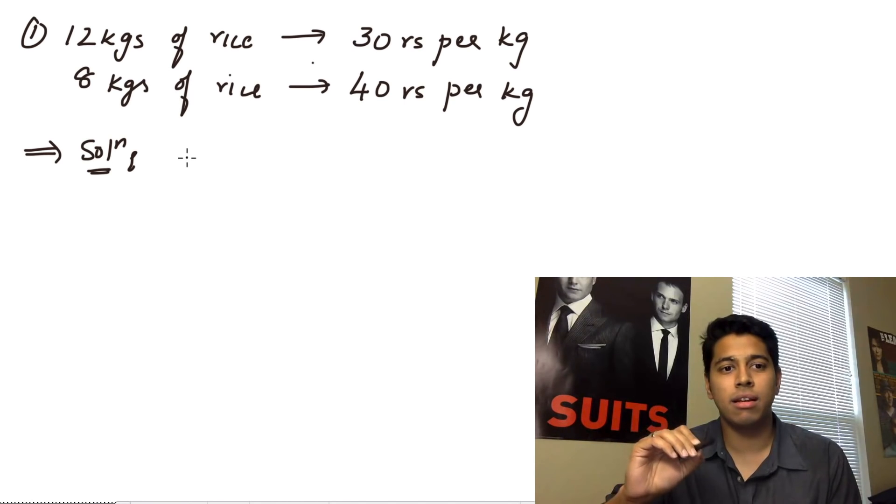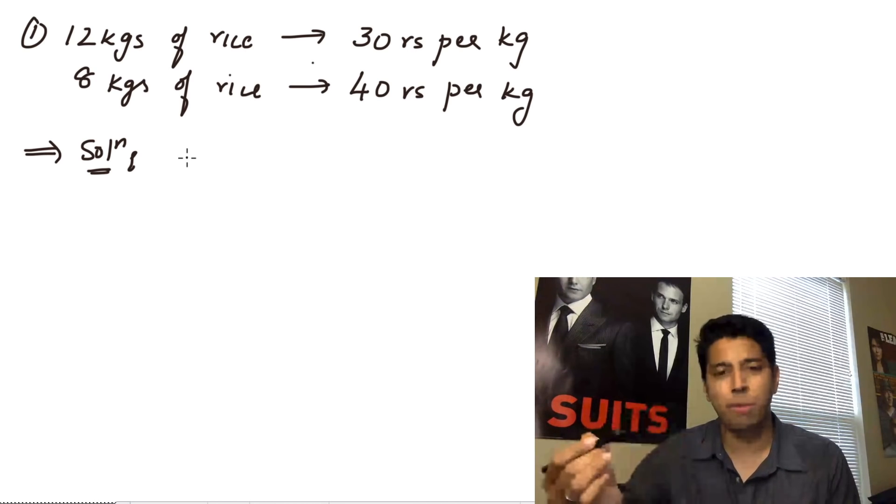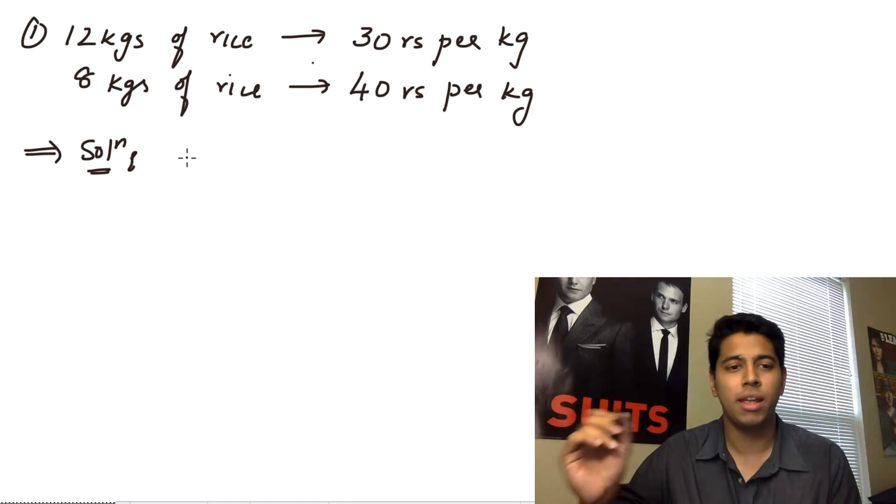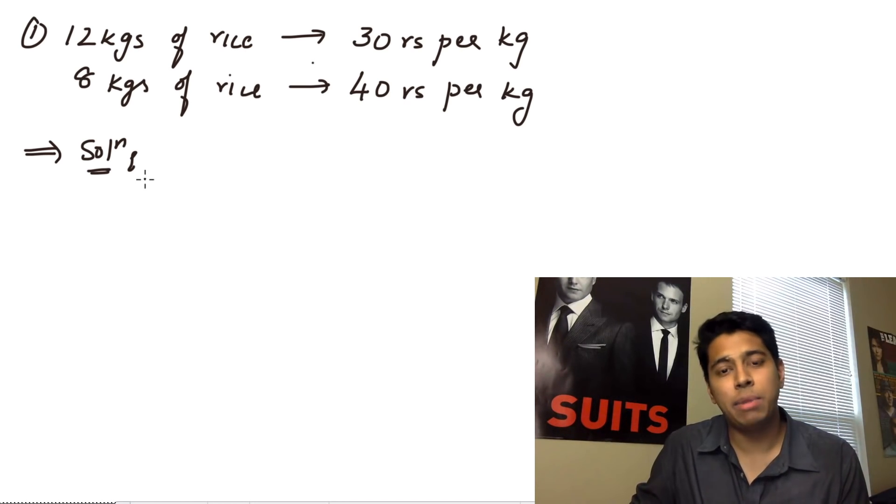Now, this seems like a different problem, but in fact, it's similar to the ones where you have the students and the marks. I want to do a problem like this so that you know that this is the same kind of problem. It's not a mixtures and allegations kind of problem, it's just a simple averages problem. So in a similar way, what you're going to do is you're just going to multiply it out again.